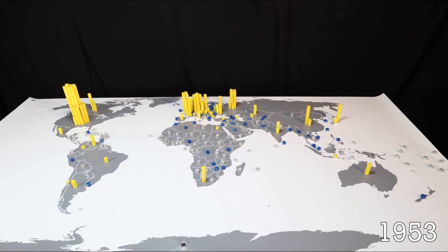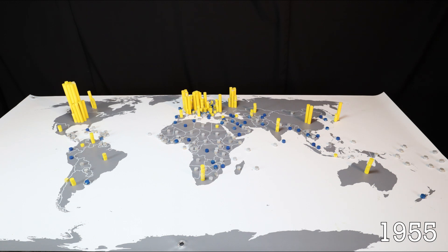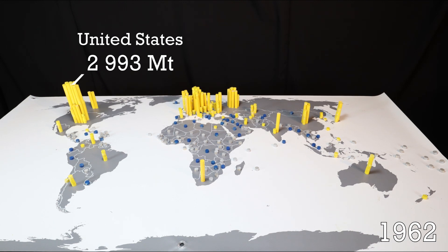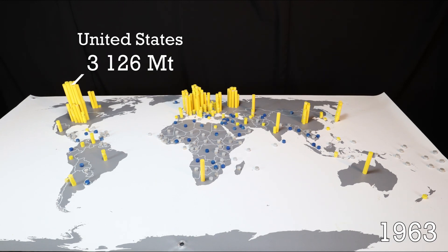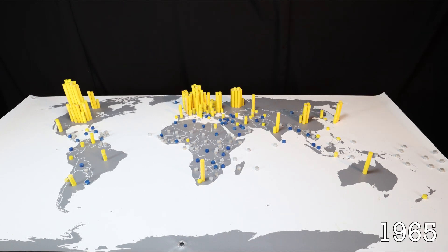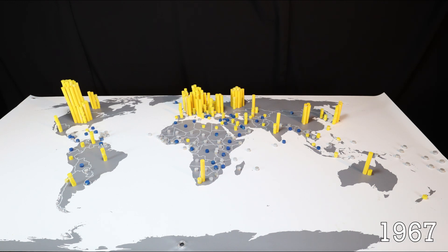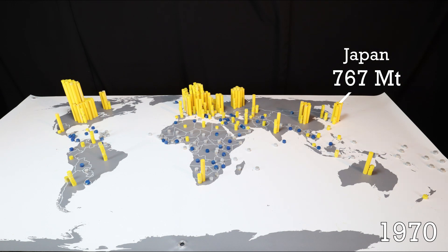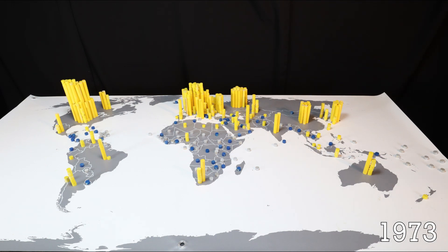Here we can see how emissions develop over time. Up until quite recently, the United States and Western Europe, alongside Russia and Japan, stood for the vast majority of the world's emissions. With economic development, other nations followed. But at this time, the Western nations still had extensive domestic raw materials extraction and heavy industry, and the small share of the emissions was the result of exported goods.